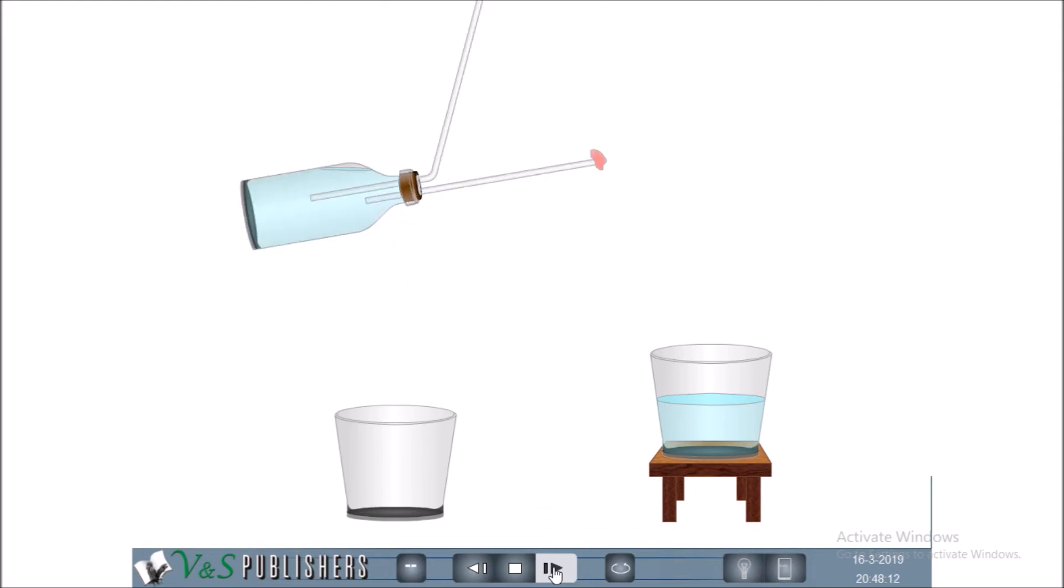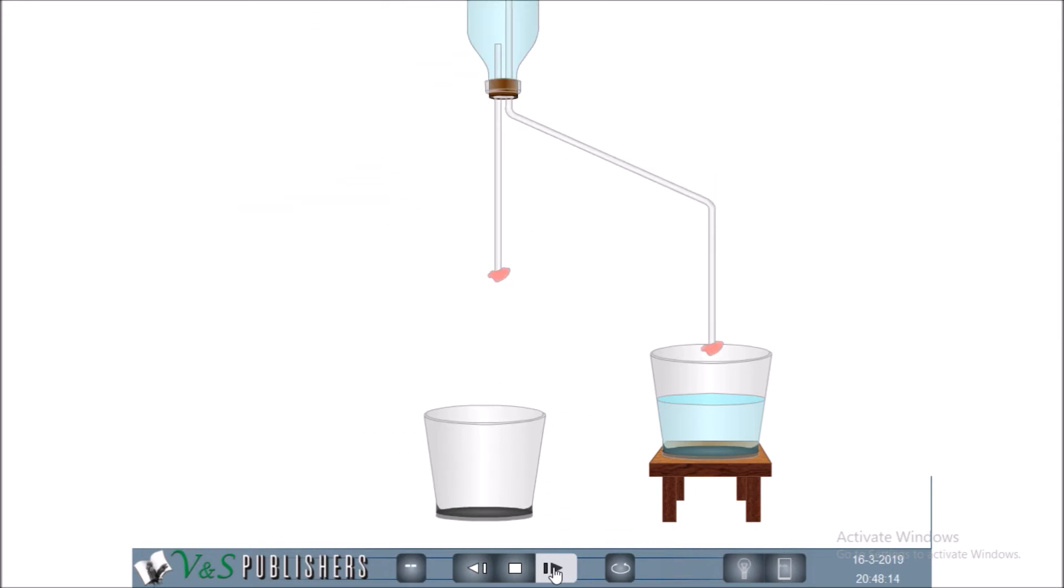Carefully turn the bottle upside down so that the tube that projects the farthest into the bottle is over the mug that is half full of water.